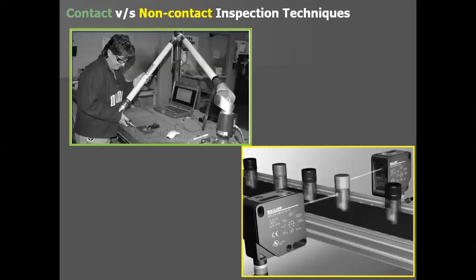In contact type inspection, there is a probe at the end. The operator takes that probe to different places of the workpiece; as soon as it touches, or when a button is pressed, that position data is recorded. This is contact type inspection. For non-contact inspection, rays are used to provide the data — no contact is involved. For contact inspection, the equipment discussed is the Coordinate Measuring Machine (CMM); for non-contact, we discuss machine vision.